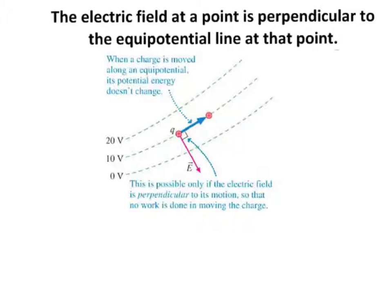Anywhere that we draw an equipotential, we can also draw an electric field line perpendicular to it. That electric field line either points toward the source charge or away from the source charge, depending on what type of source charge it is. If it's a positive source charge, the electric field points away from it; if it's a negative source charge, the electric field points toward it. But what if we don't know the sign of the source charge — we don't know if it's positive or negative? Or what if we're given only the equipotential lines of a system of multiple charges? How do we then determine the direction of the electric field given just the equipotentials? Well, let's find out.